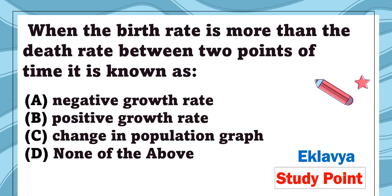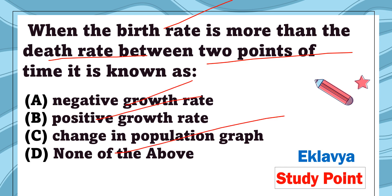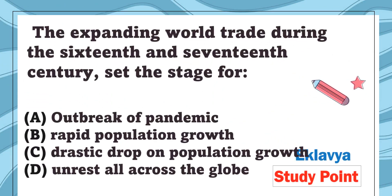Question 22: The movement of people from one place to another within a country or to a foreign country is termed as — population movement, population disturbance, migration, or immigration. The correct answer is migration. Question 23: When the birth rate is more than the death rate between two points of time, it is called — negative growth rate, positive growth rate, change in population, or graph. The correct answer is positive growth rate.